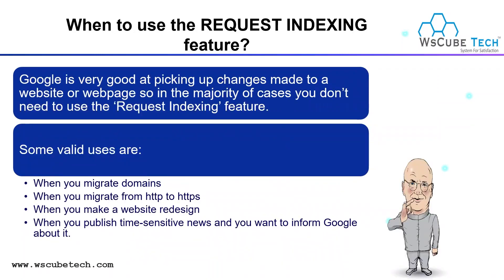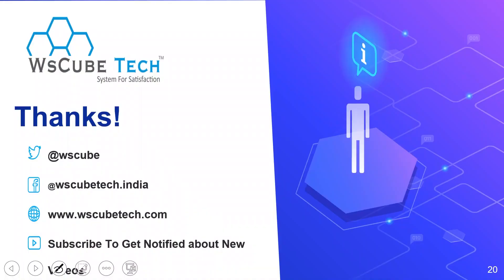When to use the request indexing feature: Google is very good at picking up changes made to a website or web page. In the majority of cases, you don't need to use the request indexing feature. Some valid uses are when you migrate a domain, when you migrate from HTTP to HTTPS, when you do a website redesign, or when you publish time-sensitive news and want to inform Google about it. This is all about crawling and indexing and all the errors related to server errors and 400 code errors, and how to fix them. Thank you so much for watching this video.